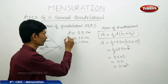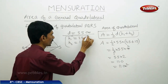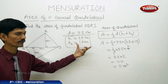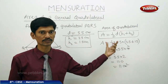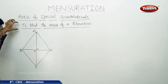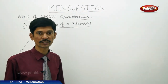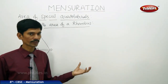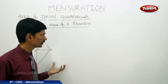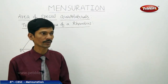If you know the length of the diagonal and the altitudes from the opposite vertices to the diagonal, we can find the area of a quadrilateral. Now let us find the area of a special quadrilateral — the rhombus. If there is a field in the shape of a rhombus, we need to derive a formula to find its area.